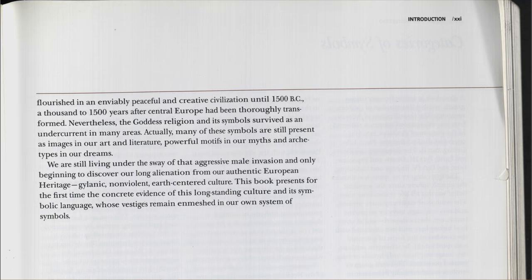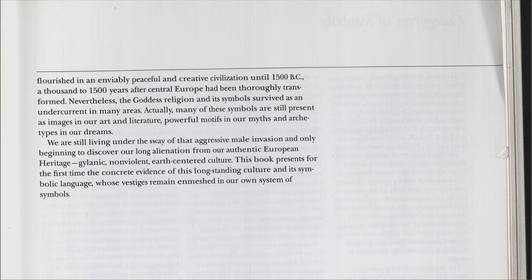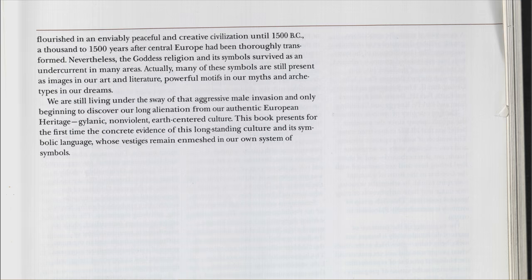Nevertheless, the goddess religion and its symbols survived as an undercurrent in many areas. Many of these symbols are still present as images in our art and literature, powerful motifs in our myths and archetypes, and in our dreams. We are still living under the sway of that aggressive male invasion, and only beginning to discover our long alienation from our authentic European heritage — gilanic, non-violent, Earth-centered culture. This book represents for the first time the concrete evidence of this long-standing culture and its symbolic language, whose vestiges remain enmeshed in our own system of symbols. That is the introduction to the Language of the Goddess by Maria Gimbutas — I'm looking forward to the next video where we get to actually dig into some of this symbolism.